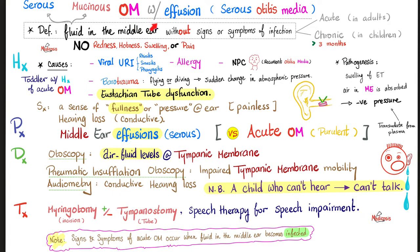Now on to today's topic: otitis media with effusion, also known as serous otitis media or glue ear. The fluid or effusion does not have to be serous — it could be mucinous as well. The definition of otitis media with effusion is fluid or effusion in the middle ear without signs and symptoms of infection. Otitis media with effusion could be acute, which we see in adults, or chronic, which we see in children — chronic here means more than three months. Since there are no signs or symptoms of infection, there is no redness, hotness, swelling, pain, or loss of function in most cases. Causes are similar, but don't forget barotrauma from flying or diving, due to a sudden change in atmospheric pressure.